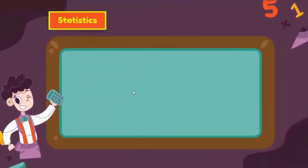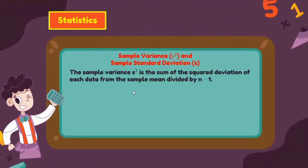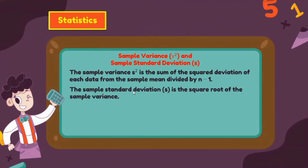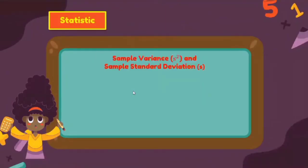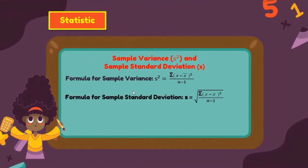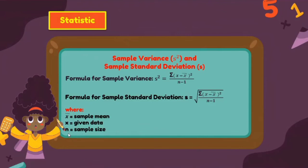The sample variance is the sum of the squared deviations of each data value from the sample mean, divided by n − 1. The sample standard deviation is the square root of the sample variance. The formulas use x̄ for the sample mean, x for the given data, and lowercase n for the sample size.